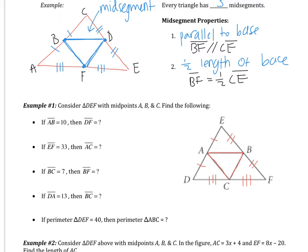So for the first bullet point, if AB equals 10, then DF equals, well I know AB is one-half of DF. So 10 is one-half of DF. That will tell me that DF is going to be 20, since half of 20 is 10.